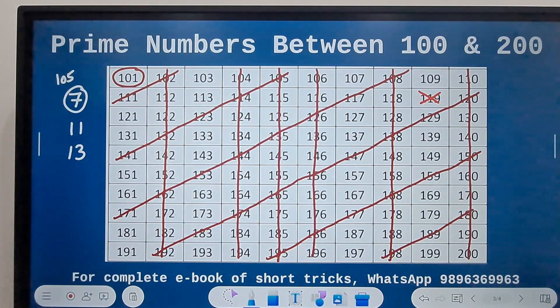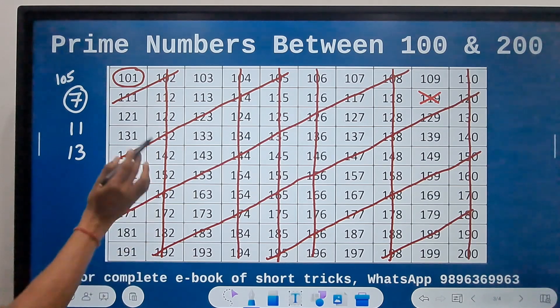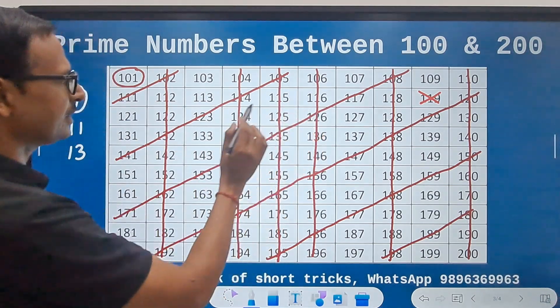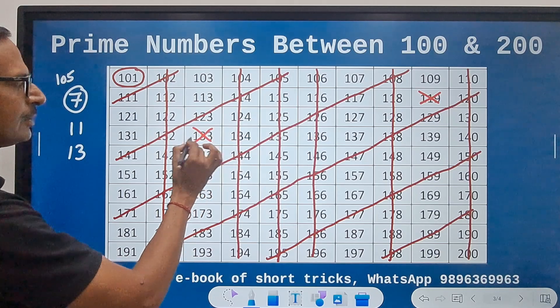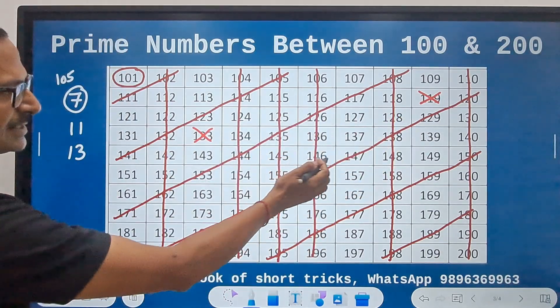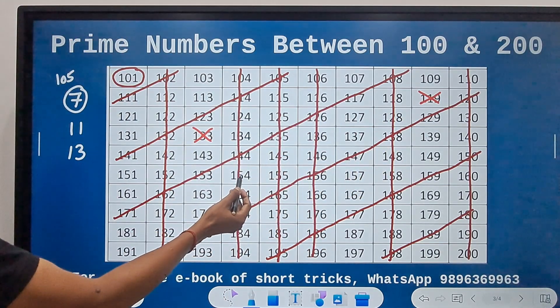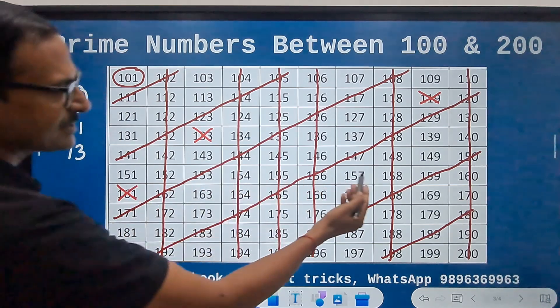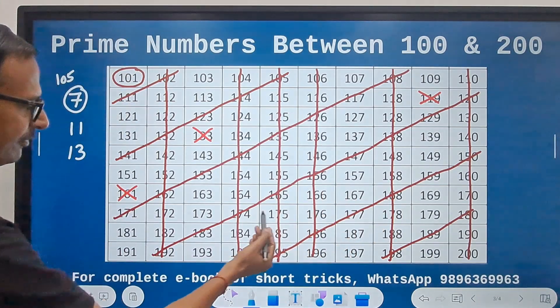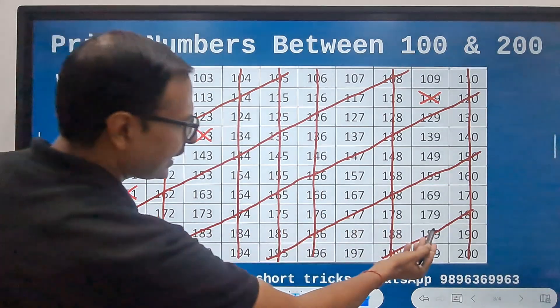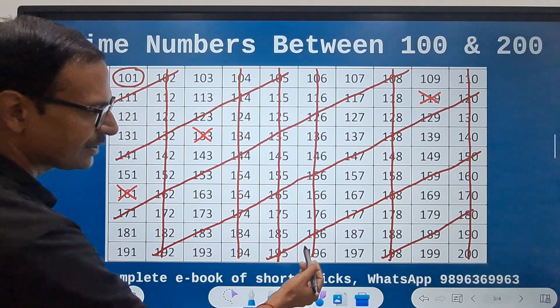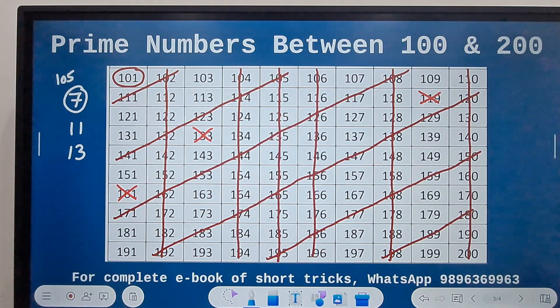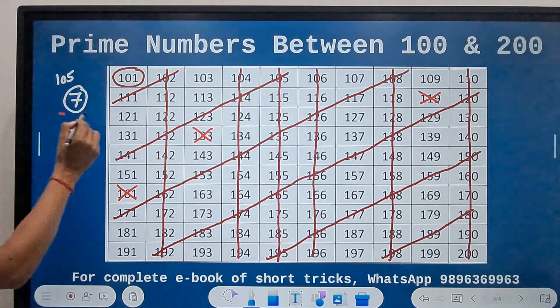After that you have 126, 133. 133 ruled out. 140, 147, 154, 161. That is ruled out. And then we have 168, 175, 182, 189, 196. That's it. So only three more ruled out. So 7 is done now.